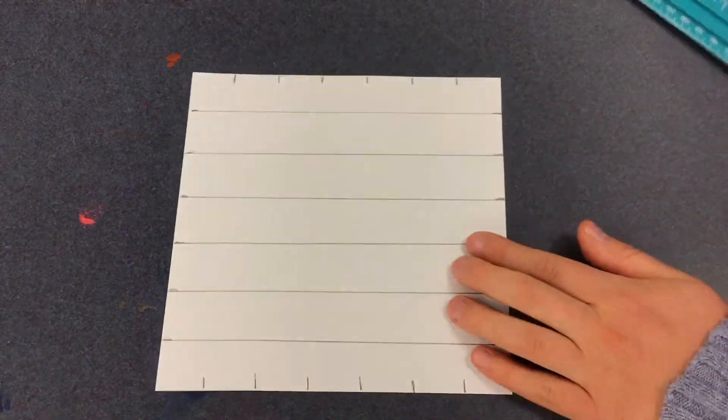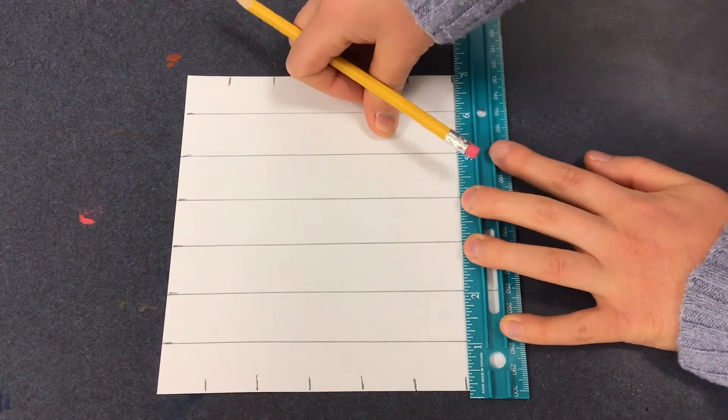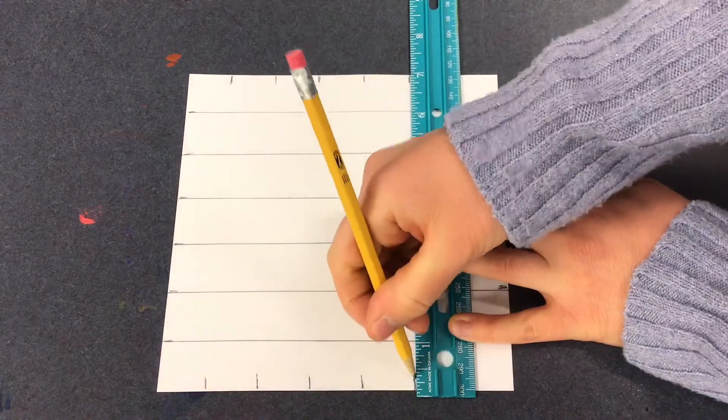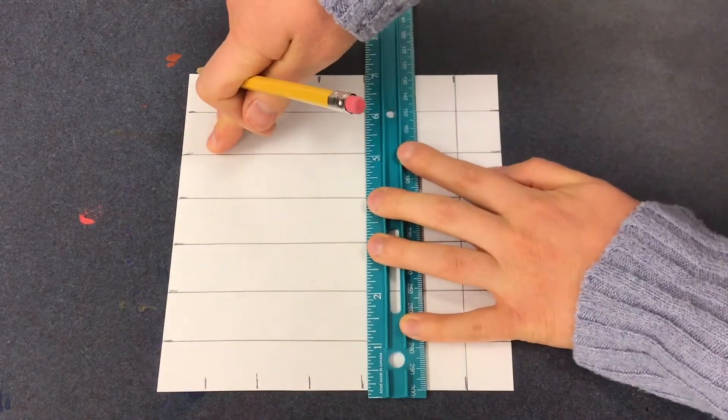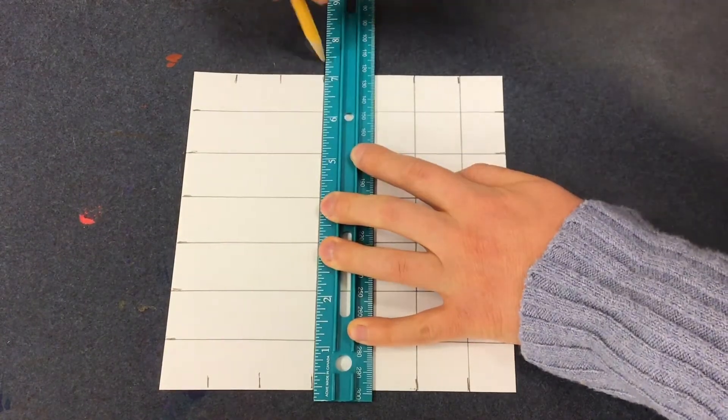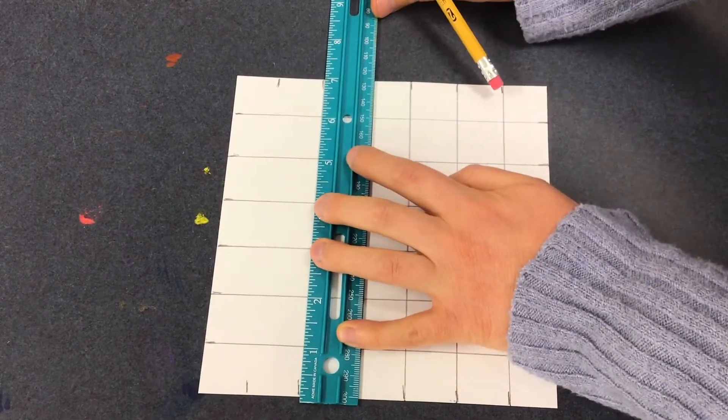Now turn your paper and do the same thing with the rest of the lines and you'll see that you're making a checkerboard pattern. Again, using the ruler to draw the straight lines is super important because op art requires precision.